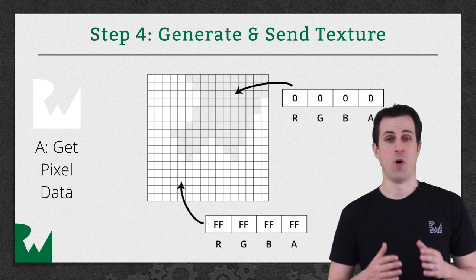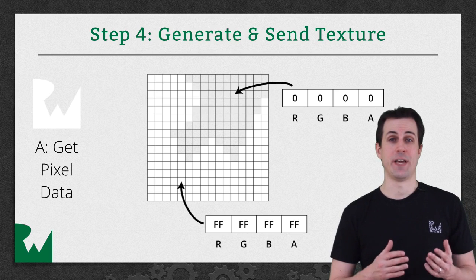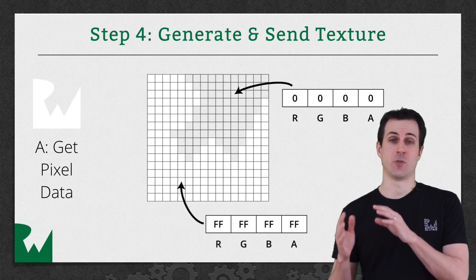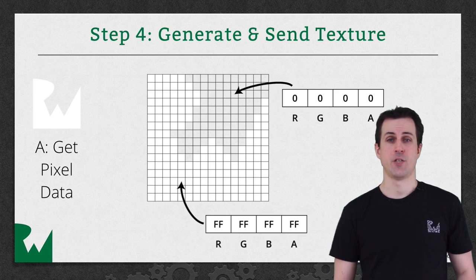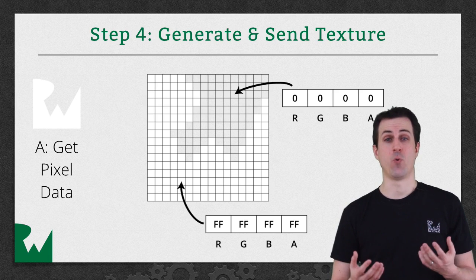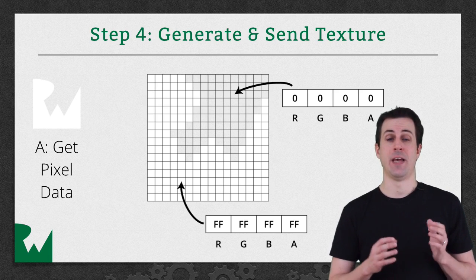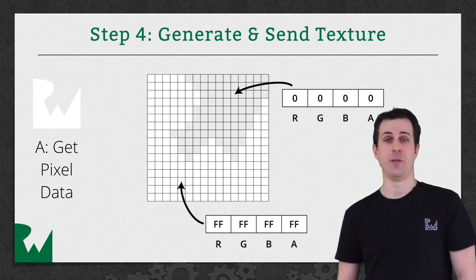And certain pixels are 1, 1, 1, 1, which means they're white. And then there's certain pixels that are 0, 0, 0, 0, which means they're transparent. So we need to load this using usually core graphics routines on iOS, and then eventually we need to send that to the GPU.